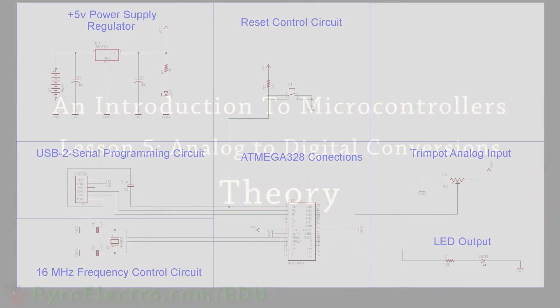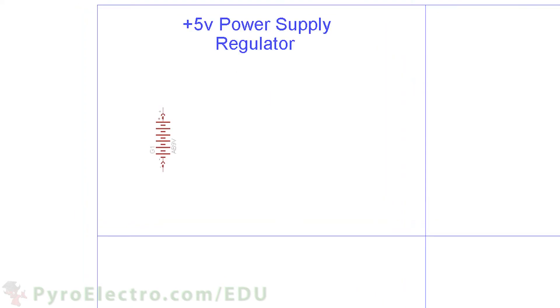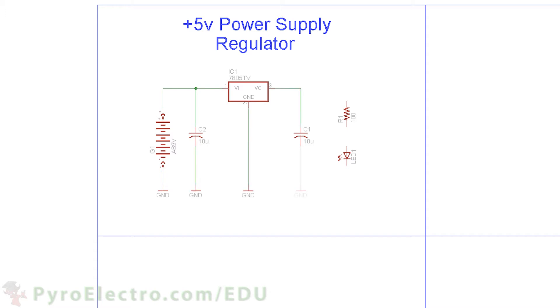The schematic for this lesson's experiment is similar to some of the previous lessons, but let's go through it part by part to see what is connected and where. The power supply regulator circuit uses a 9-volt battery, 7805 plus 5-volt regulator, two bypass capacitors, and a resistor plus red LED for notification that power is good.